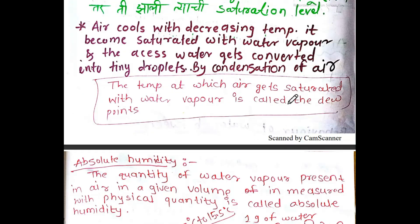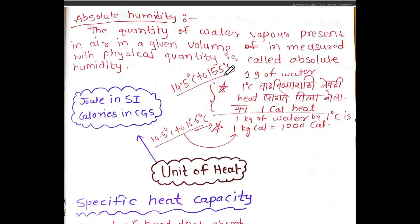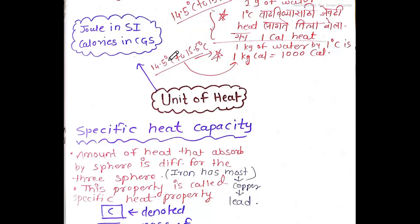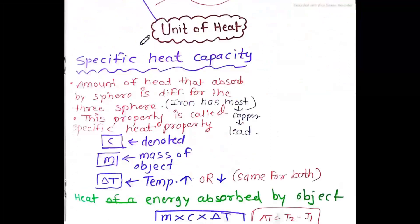Dewdrops form when air cools. The temperature at which air gets saturated with water vapor is called the dew point. Next is absolute humidity — the quantity of water vapor present per unit volume of air.